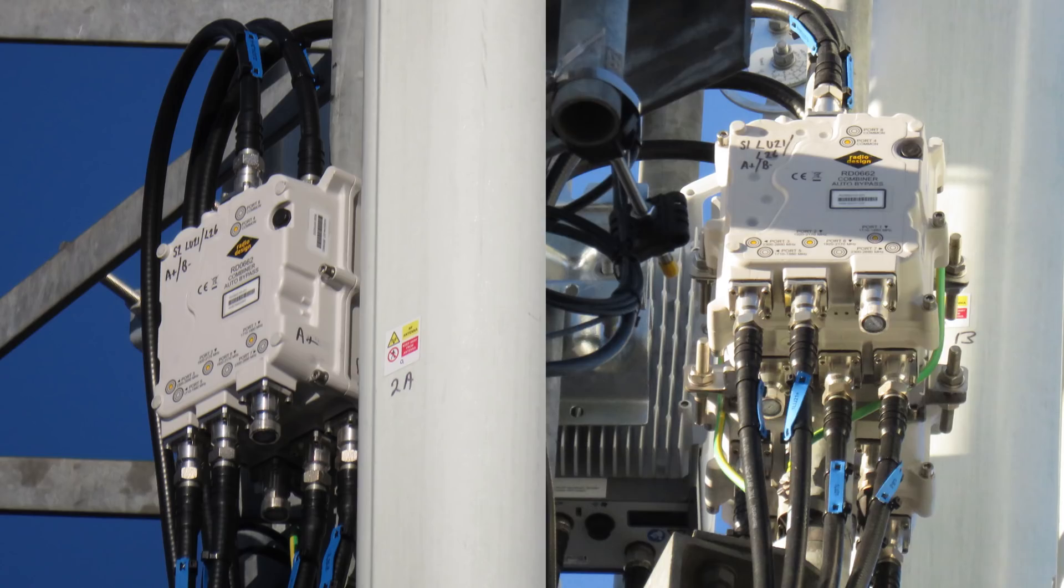Then the four high ports, so each pair of high ports goes to a triplexer. Here are the radio design RD 0662 triplexers. So each of these has the ultra high band ports for the L26, then ports for the L21 and finally ports for L18. Now in these triplexer examples the L18 is being carried for O2 on the other set of triplexers and therefore the 1800 ports on these are not in use, however the 2100 and 2600 ones are.